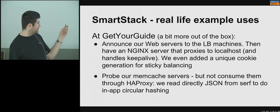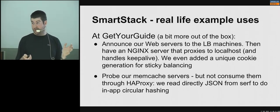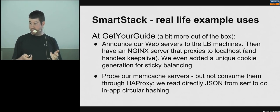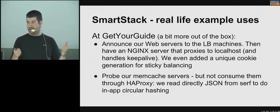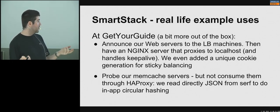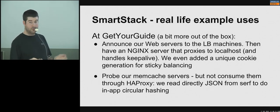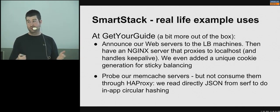There's also a little patch for cookie-based load balancing. For Memcache servers we don't want HA Proxy because of consistent hashing and circular hash — we don't want round robin — so we actually read directly the output of Serf, which generates a JSON file, and we choose our Memcache servers from there.